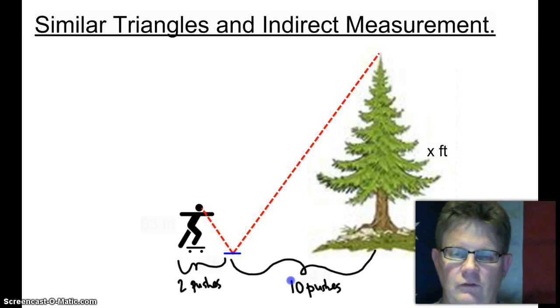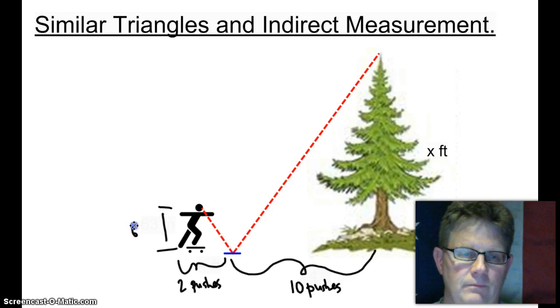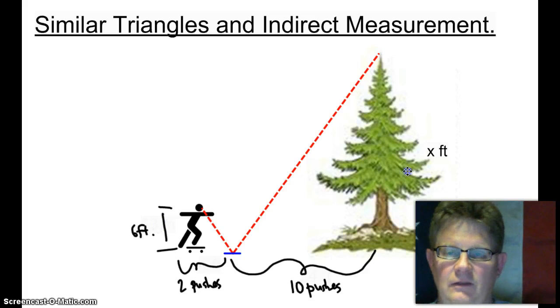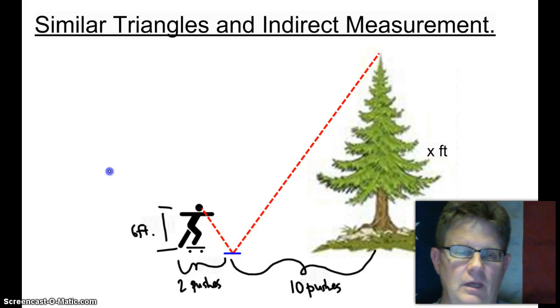And the question is, how tall is the tree? We said that he was six feet tall. So we can make a proportion: height to height or height to pushes. It doesn't matter. Why don't we just go height to height?